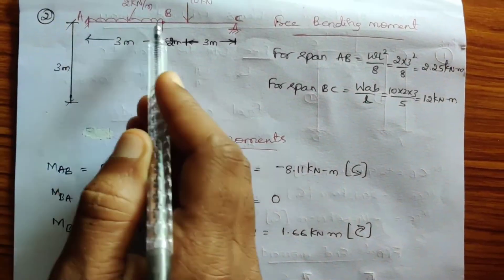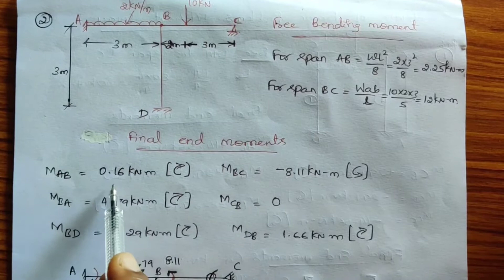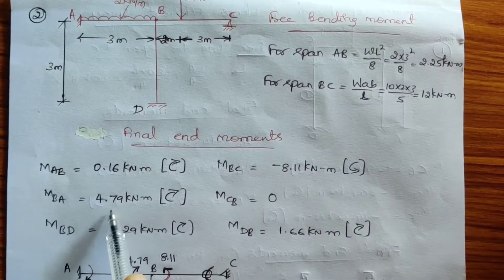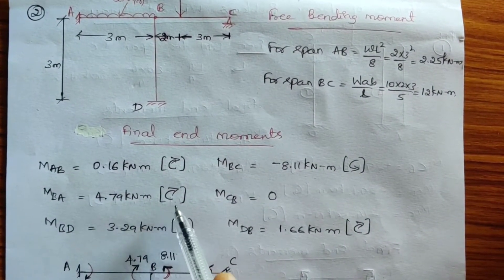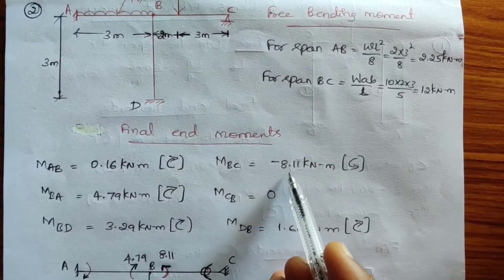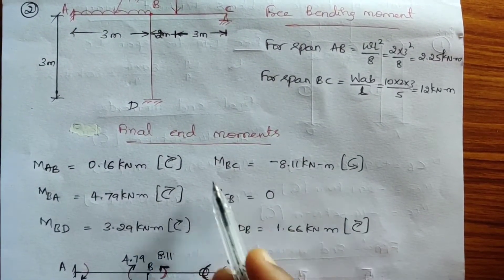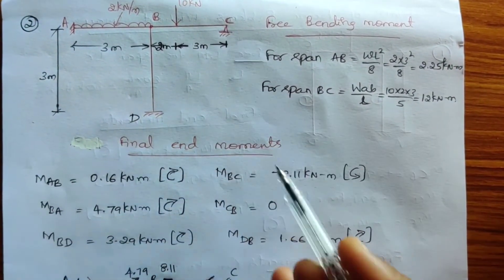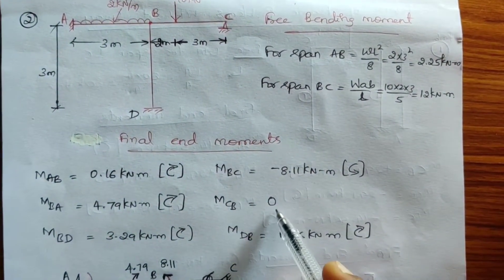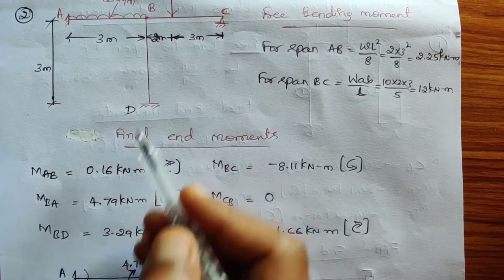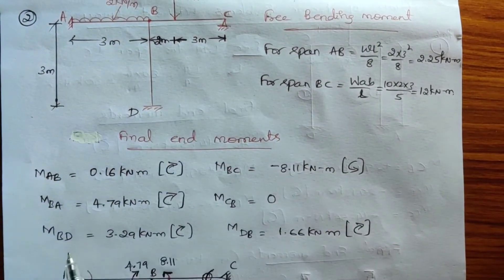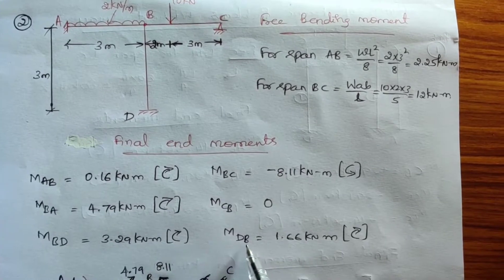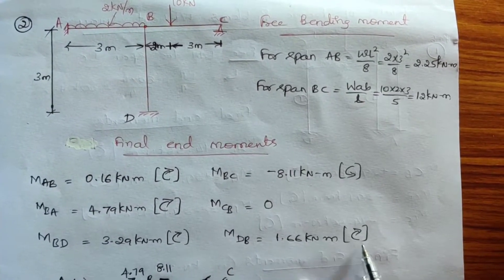The end moments are: MAB = 0.16 kN·m clockwise, MBA = 4.79 kN·m clockwise, MBC = −8.11 kN·m anti-clockwise. Since we have a hinge support at C, the end moment MCB = 0. For the BD span, MBD = 3.29 kN·m clockwise and MDB = 1.6 kN·m anti-clockwise.